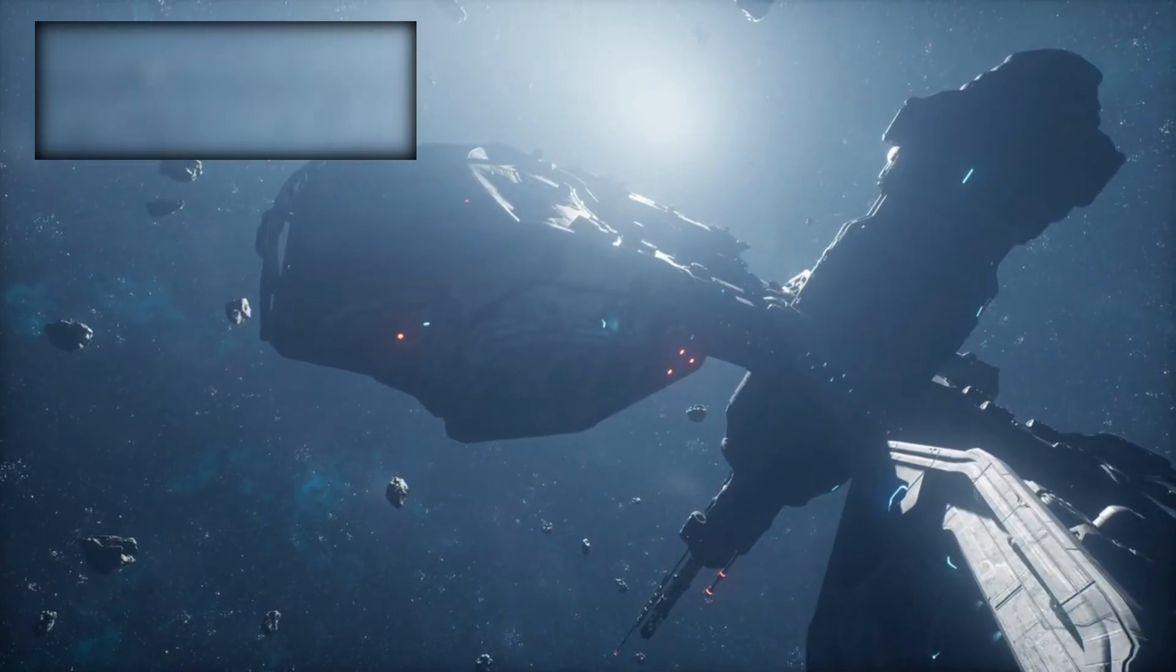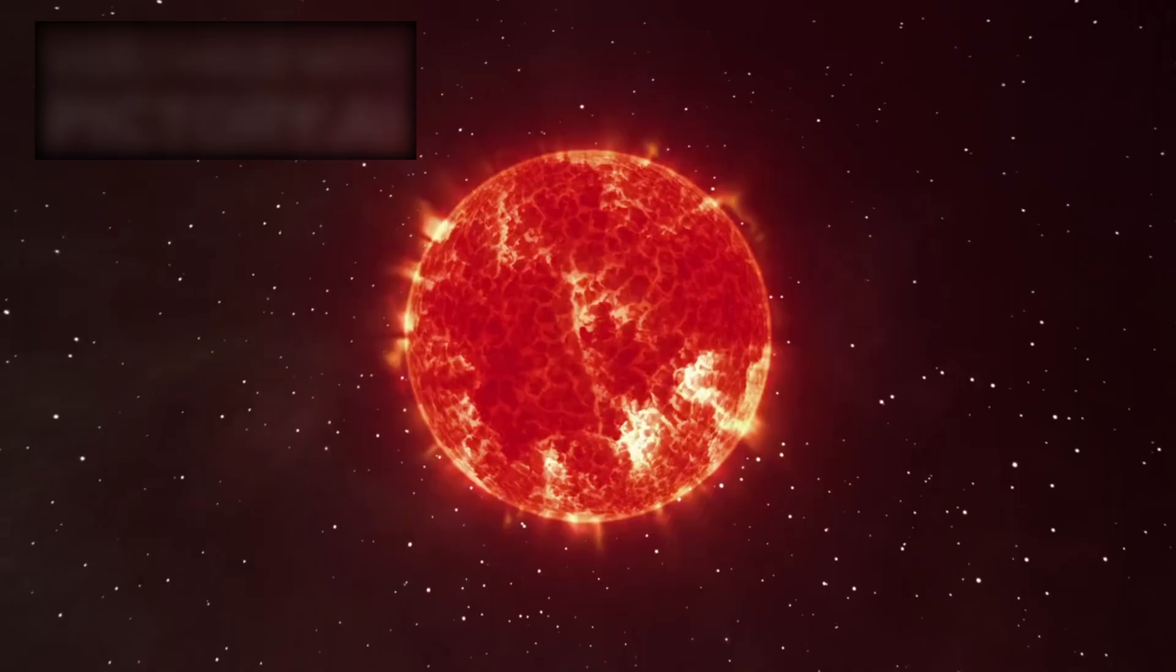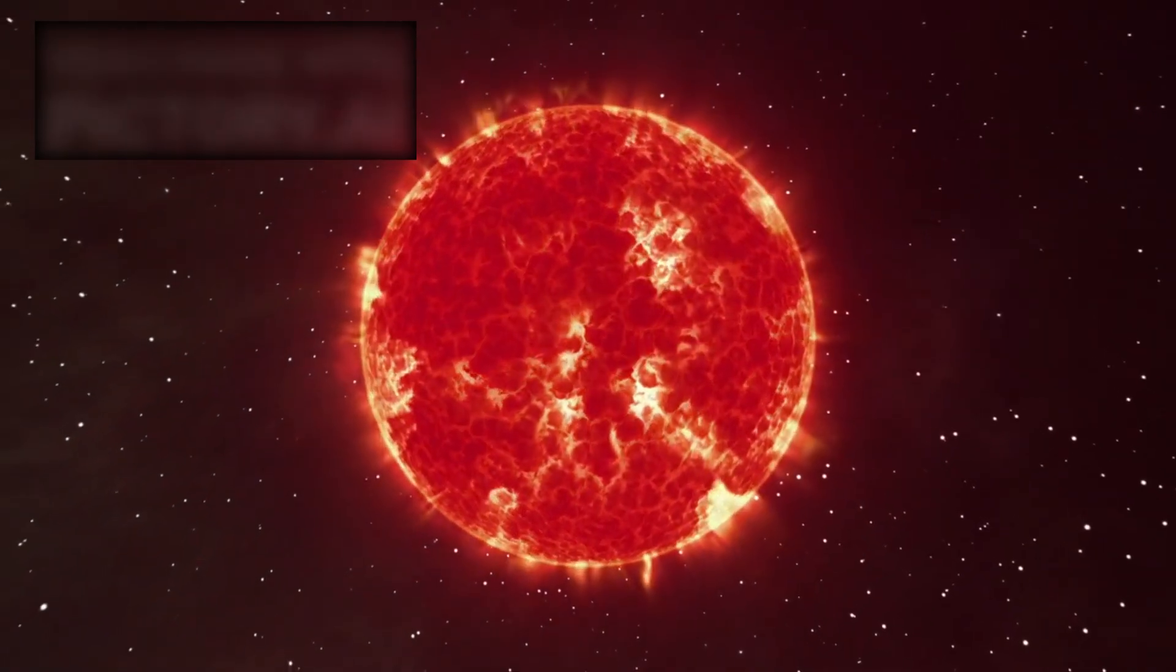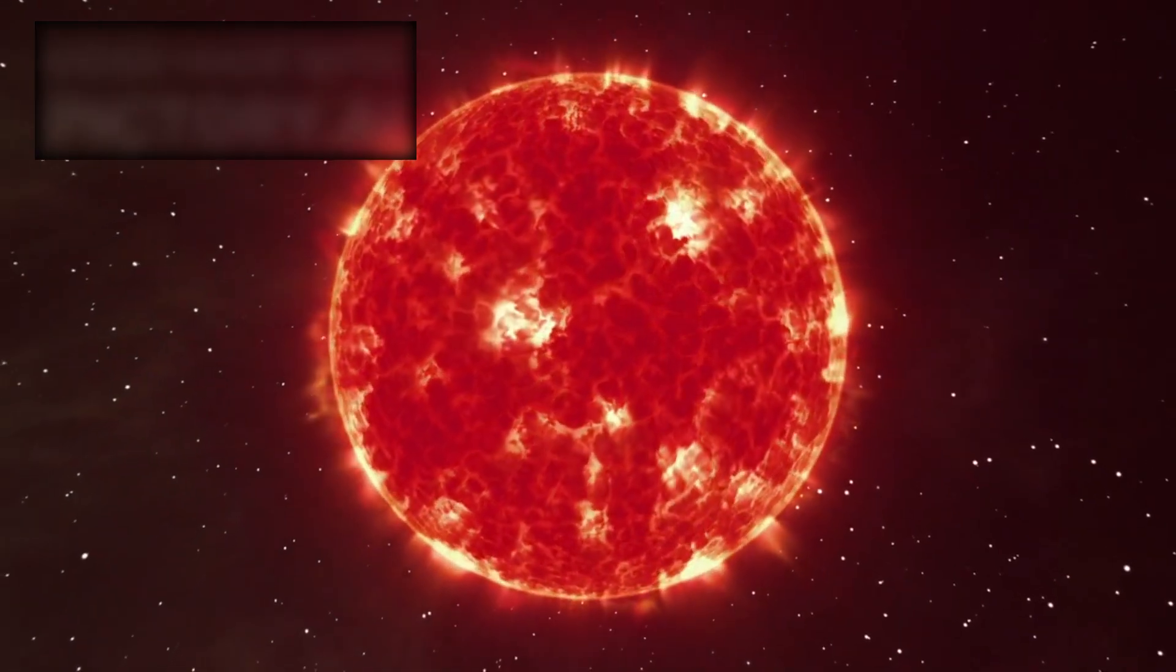Proxima b orbits a red dwarf star, smaller and dimmer than our sun, but far more volatile. Red dwarfs are infamous for unleashing violent stellar flares and radiation storms that could strip a planet's atmosphere away like peeling paint.